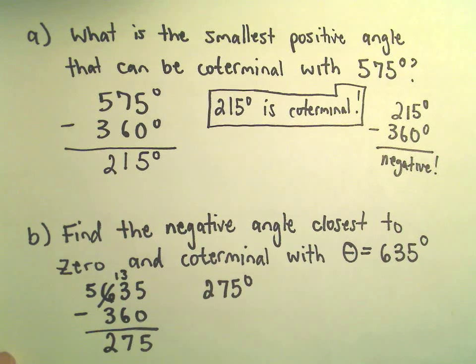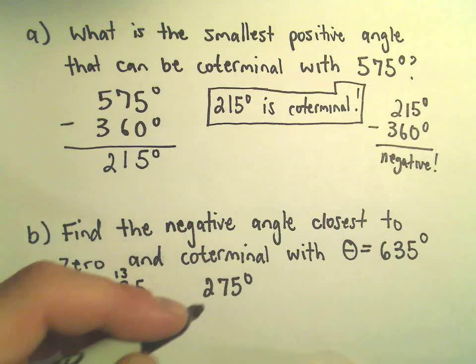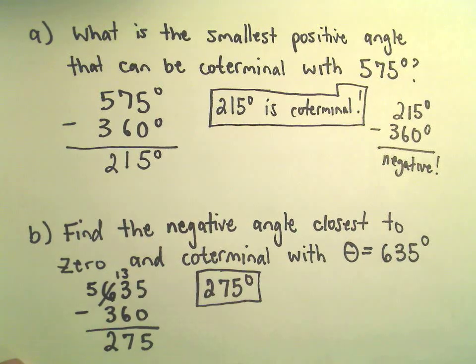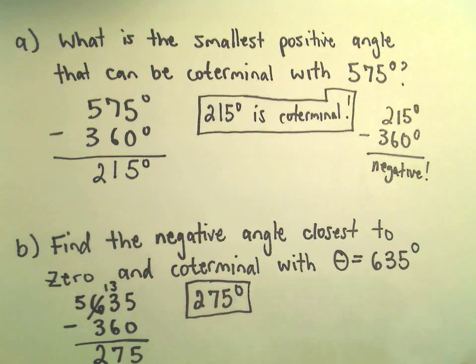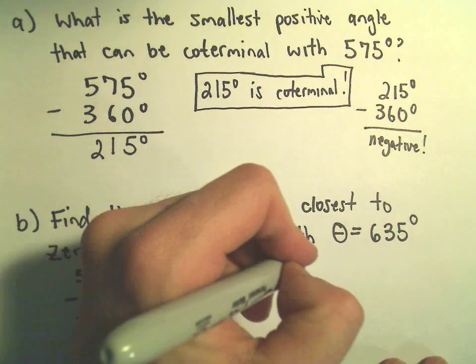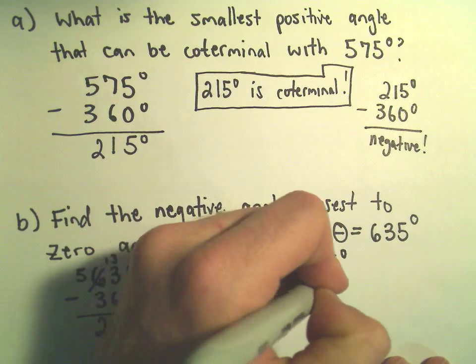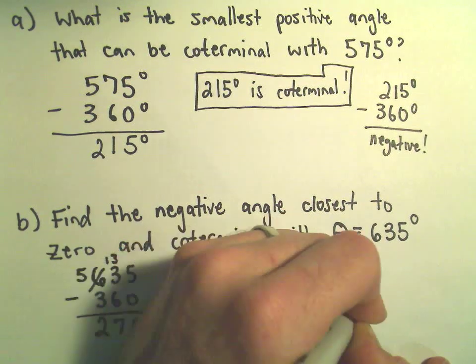Again, that's definitely going to be coterminal with 635 degrees. But again, this is not a negative angle, so it's not the answer we're looking for. So what we're going to have to do is we're going to have to subtract away another multiple of 360 degrees.